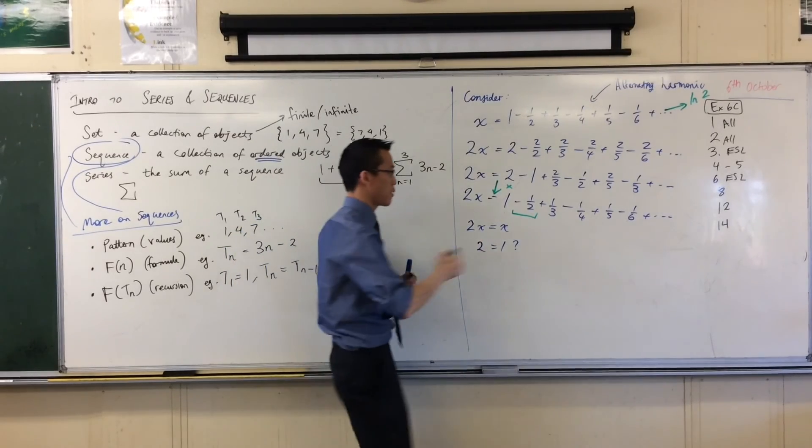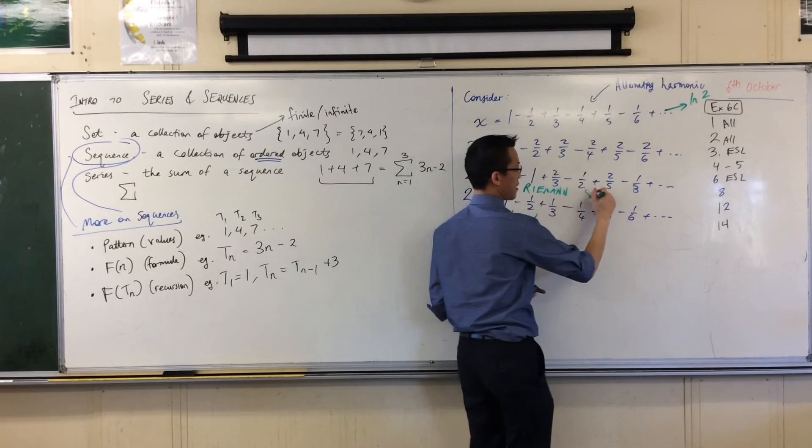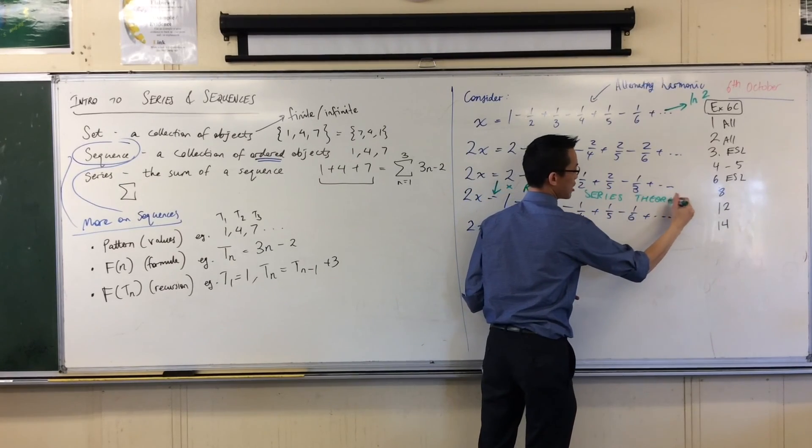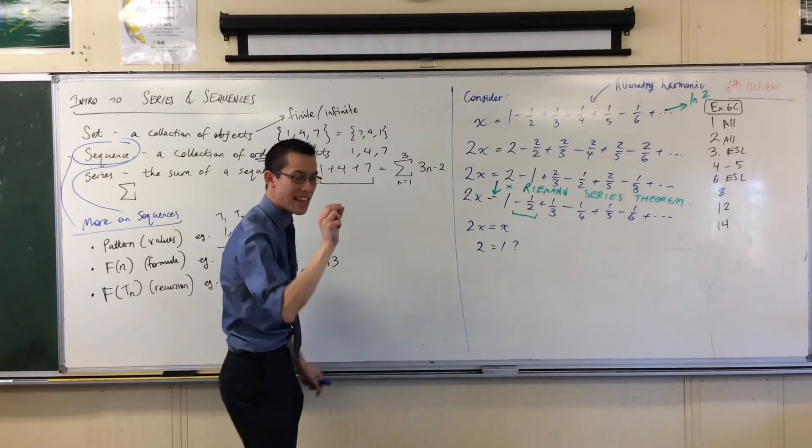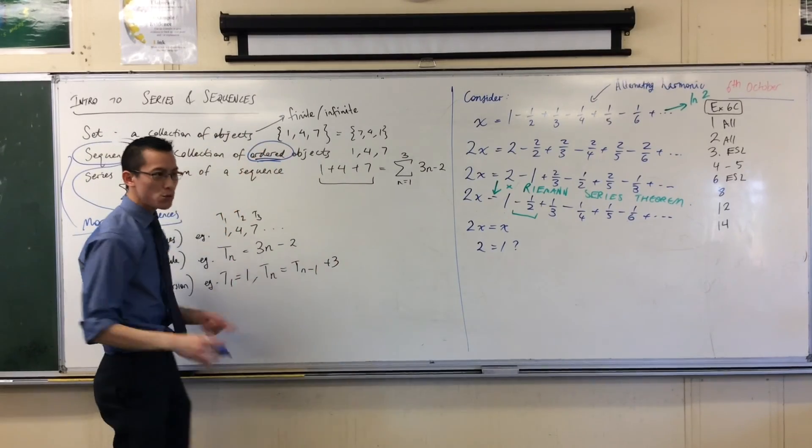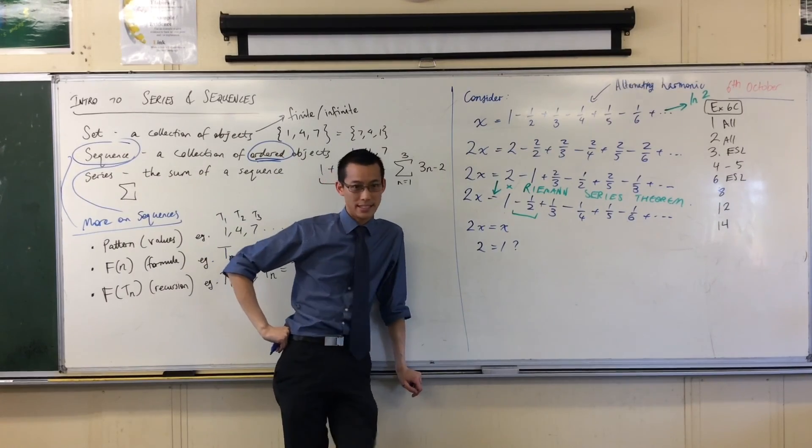There's a property, not a property, a theorem to do with this. It's called the Riemann Series Theorem, or the Riemann Rearrangement Theorem, which says there are certain kinds of series, like this, where if you muck with their order, all you have to do is rearrange things a little, and you'll come out with something completely different.